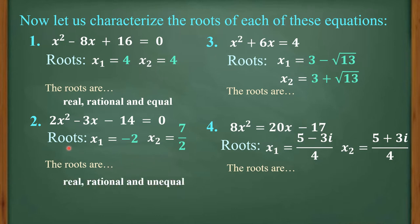For number 2, 2x squared minus 3x minus 14 equals 0, we have negative 2 and 7 halves as their roots. Therefore, the roots are real, rational, and unequal.